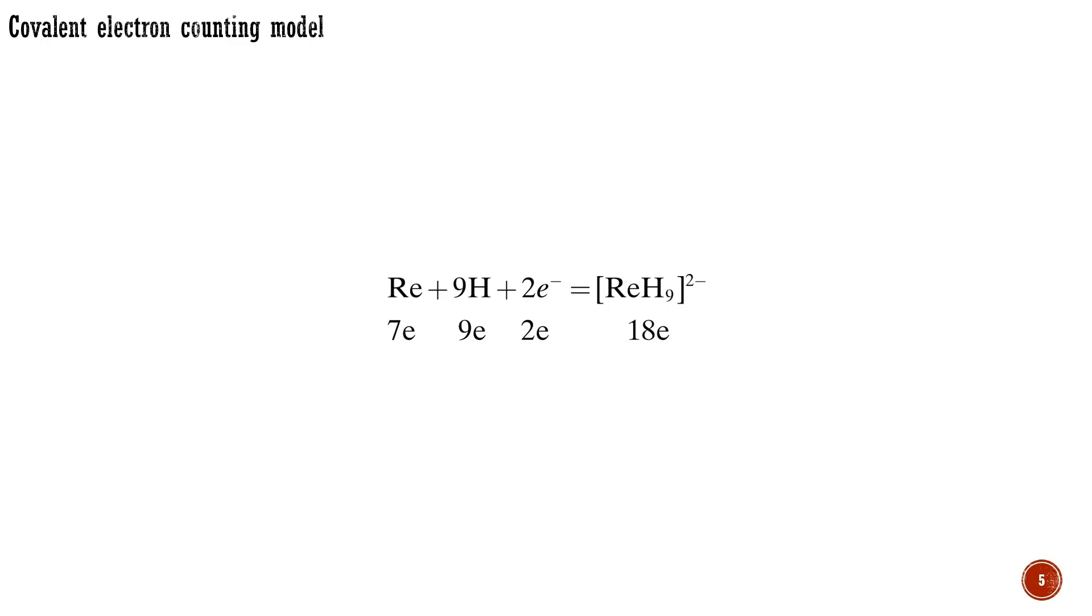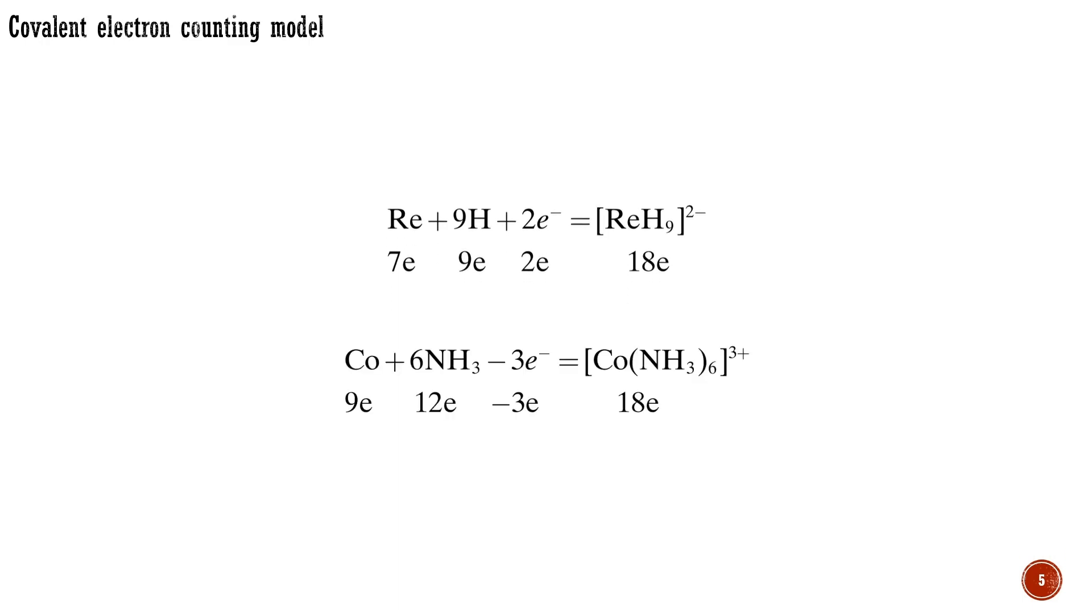Note that X-type ligands in the covalent electron counting model are considered as 1-electron donors. Other anionic X-type ligands that also provide 1 electron to the metal on forming a covalent bond include methyl anion, chloride, etc. A neutral L-type ligand, such as ammonia, contributes its two lone pair electrons to the metal on binding, as demonstrated for this Werner complex. The net plus 3 ionic charge requires subtracting 3 electrons from the count. These electrons are transferred to the anions, which are not shown here.